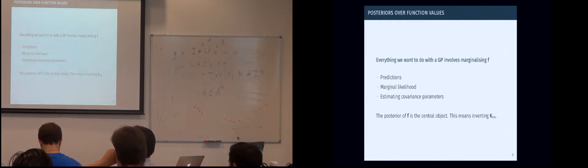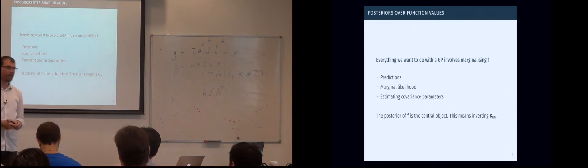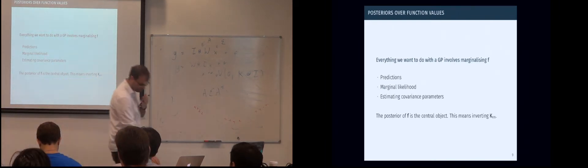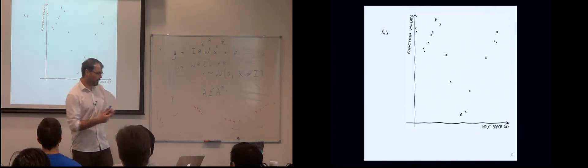What I want to focus on is the posterior across the function. What does the posterior look like? When we make a prediction in a GP, what do we do? Is the posterior still a Gaussian process? The prior was a Gaussian process — we used a Gaussian process prior.